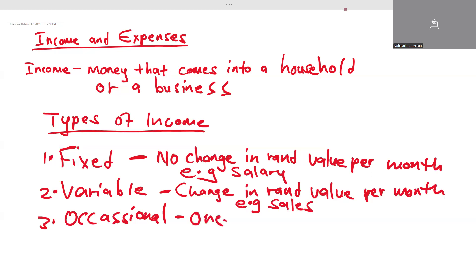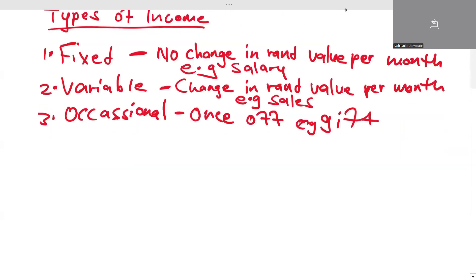Occasional income is once-off. If you receive this amount now, it may happen that you never receive that amount again. An example could be a gift — if someone has gifted you with some money, it does not mean they are going to do the same thing again.